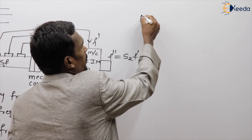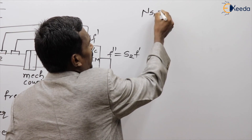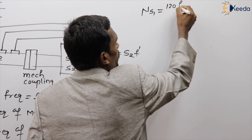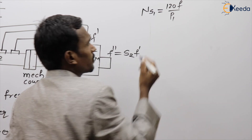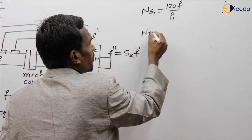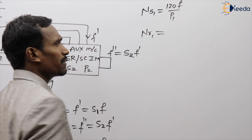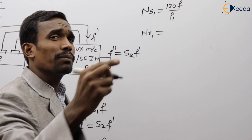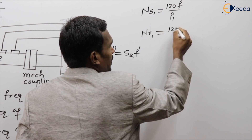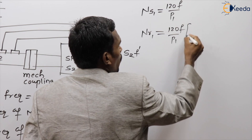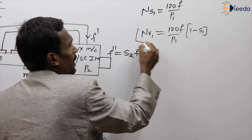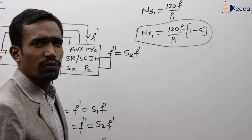The synchronous speed of machine 1 is ns1 = 120F / P1. The rotor speed of machine 1 is nr1 = ns1 × (1 − S1), that is 120F/P1 × (1 − S1). This is the rotor speed of the main machine.